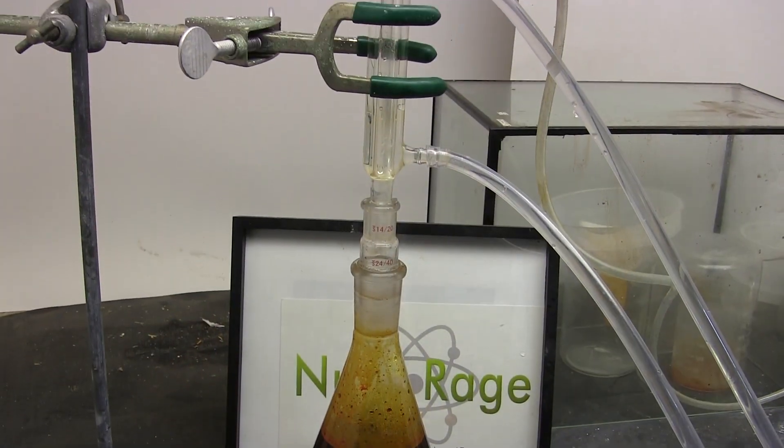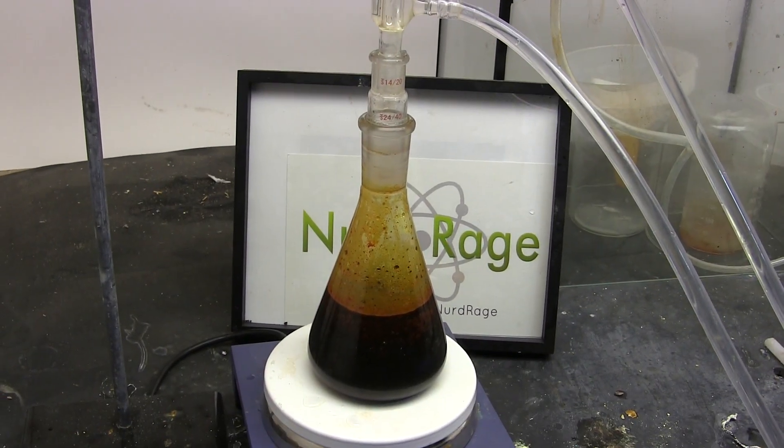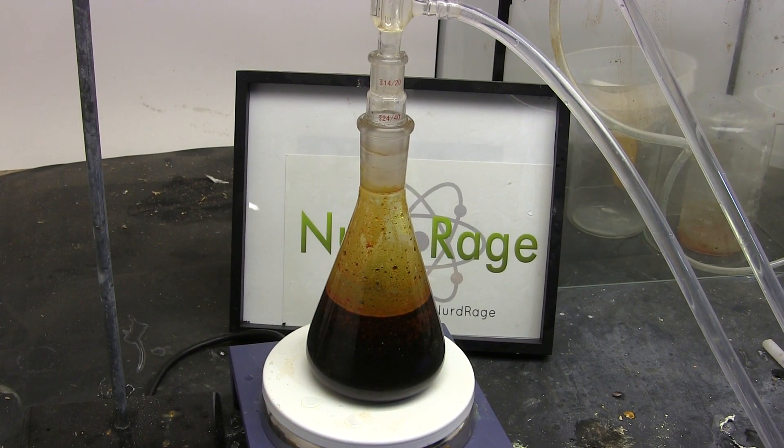Now we construct a reflux setup with a vertical condenser. The idea is that we don't want to lose any of our chemicals like bromine. Turn on the cooling, stirring and heating until the mixture just starts to boil.